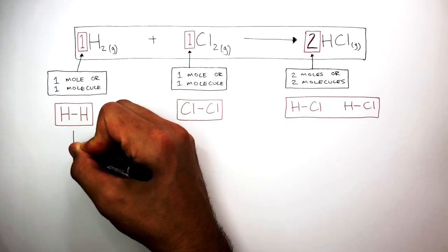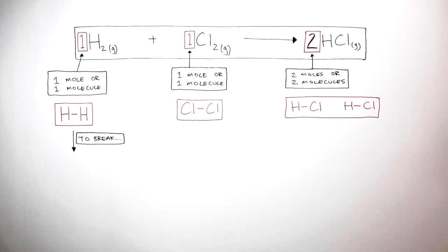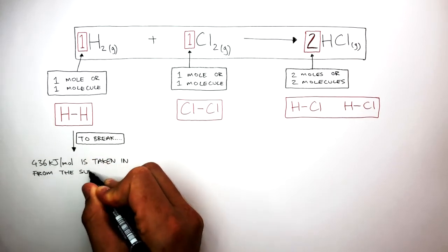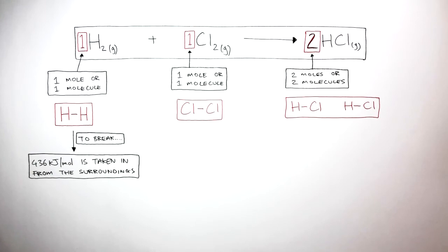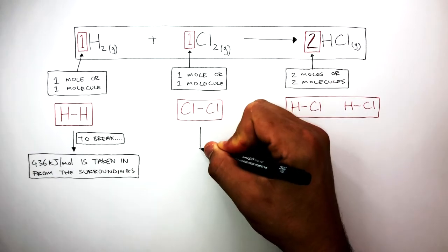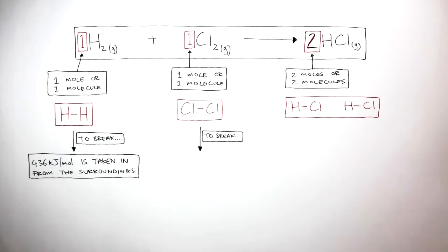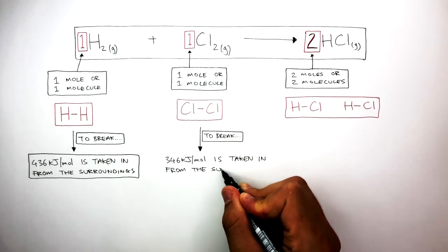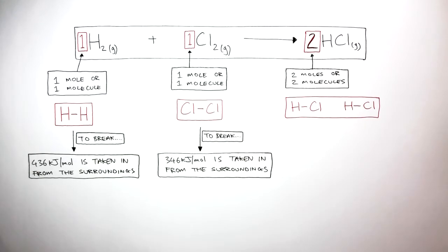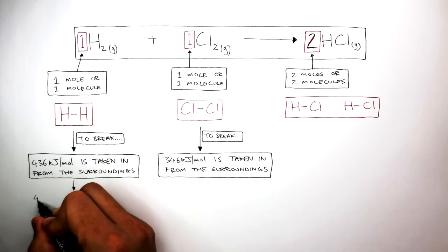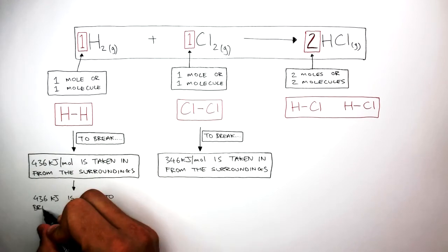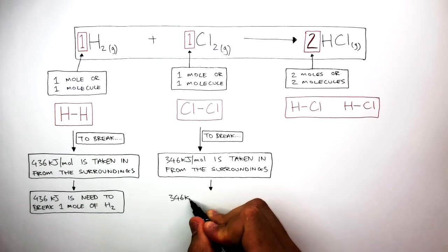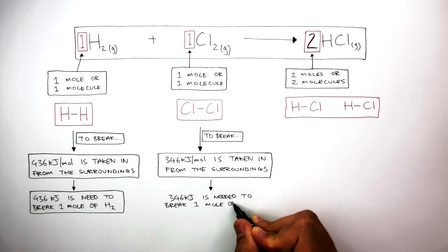Focusing on hydrogen: to break this single covalent bond, 436 kilojoules per mole is taken in from the surroundings to break one mole of H-H bonds. Focusing on chlorine: to break this single covalent bond, 346 kilojoules per mole is taken in from the surroundings to break one mole of Cl-Cl bonds.